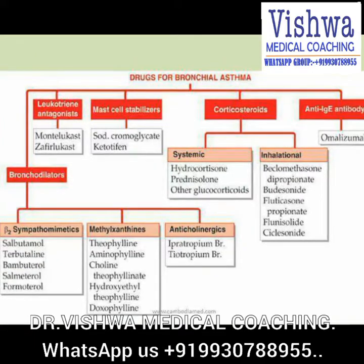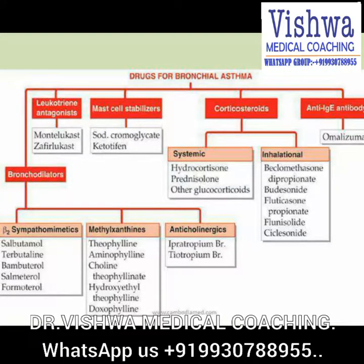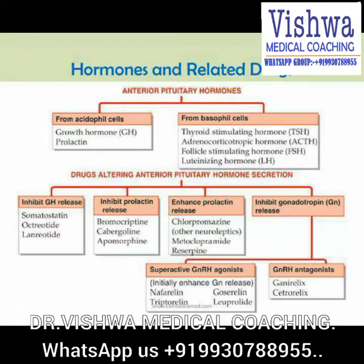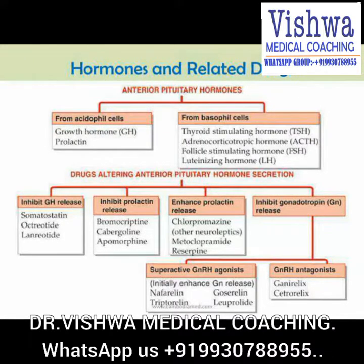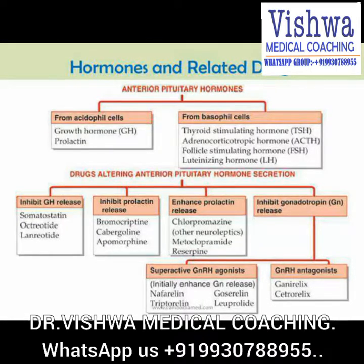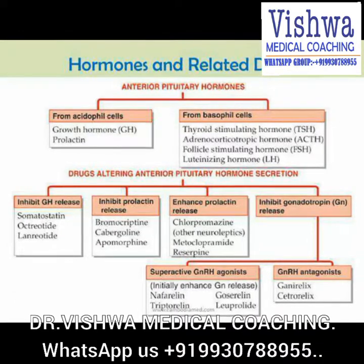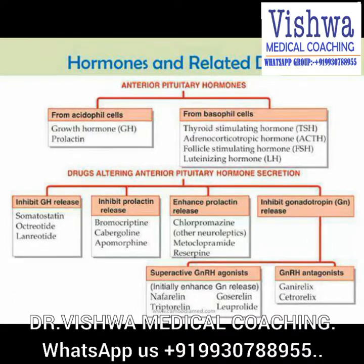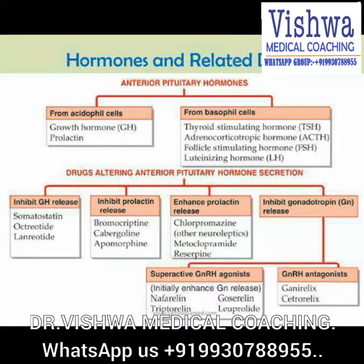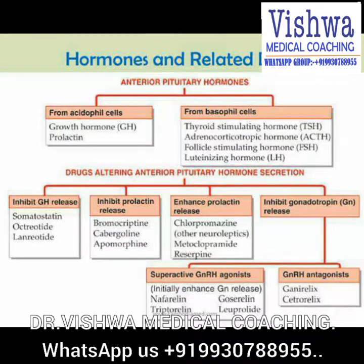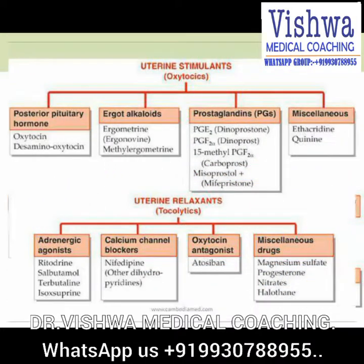Drugs used for bronchial asthma and hormones and related drugs are also covered. Hormone-related drugs are used in hormone deficiency states, such as anterior pituitary hormone deficiencies. Examples include growth hormone and thyroxine. Posterior pituitary hormone supplements include oxytocin and vasopressin, used in deficiency states.